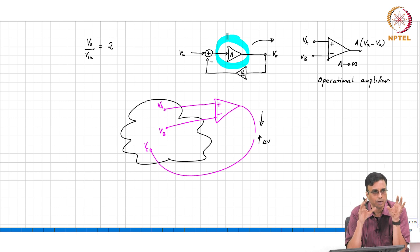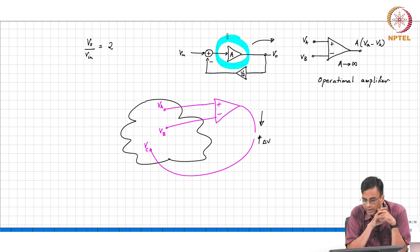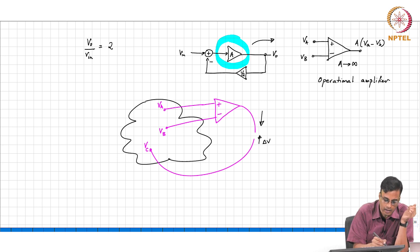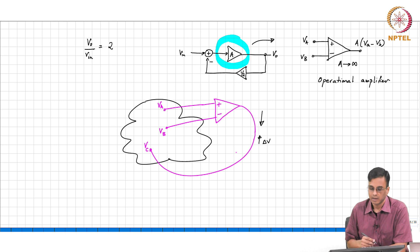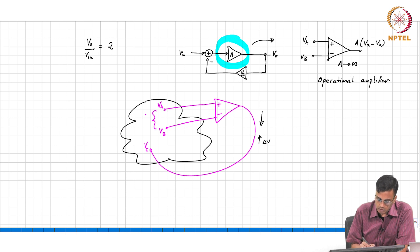Therefore, if an op-amp is part of a negative feedback loop and the op-amp is ideal so its gain is infinite, then it must follow that the error voltage — which is the difference between VA and VB in this particular example — must be equal to zero.